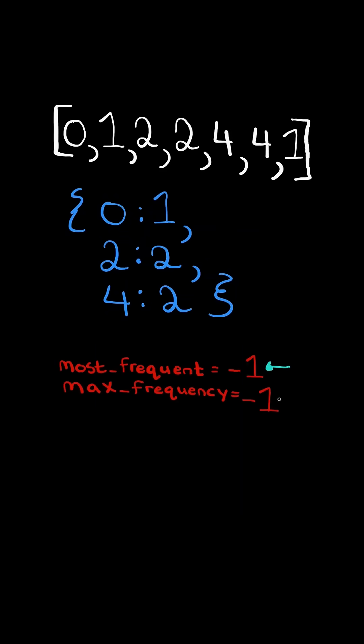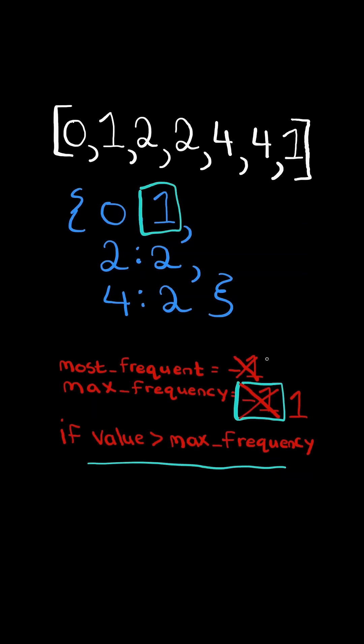We then initialize two variables and iterate through the key value pairs in the hash map and check if the value is greater than max frequency. If it is, then we update the max frequency and we update the most frequent with the key. And we continue and check the next.